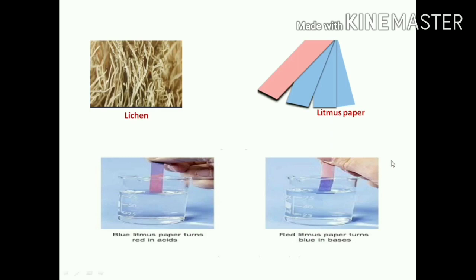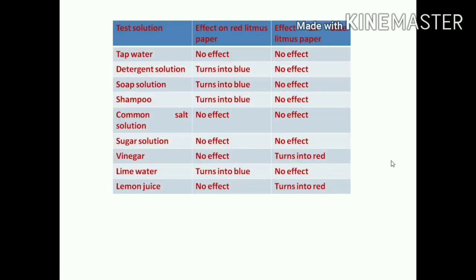This is the acid and base experiment - you can find out which one is acid and which one is base solution by the litmus paper. Here a table is given showing the test solution, effect on red litmus paper, and effect on blue litmus paper.